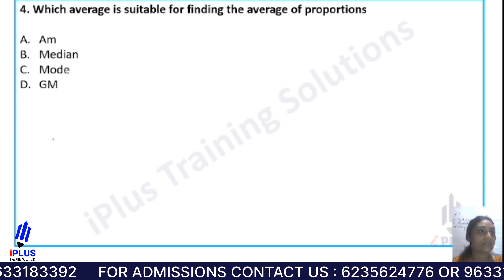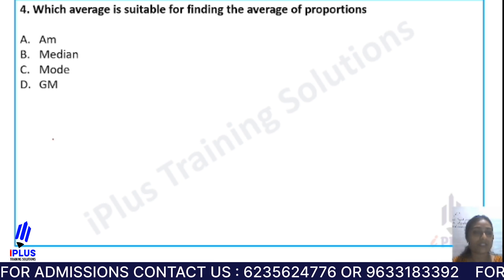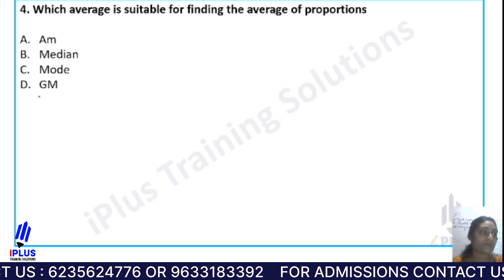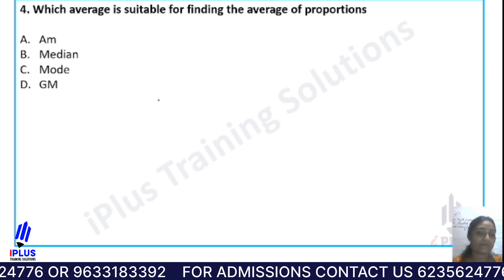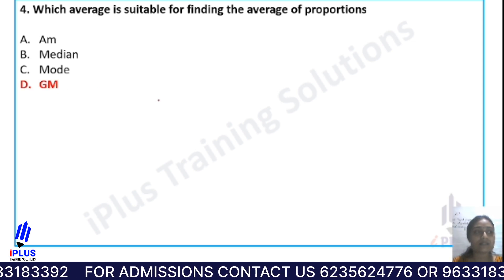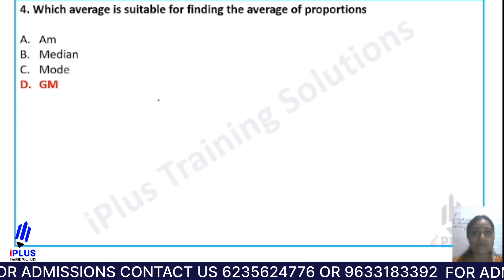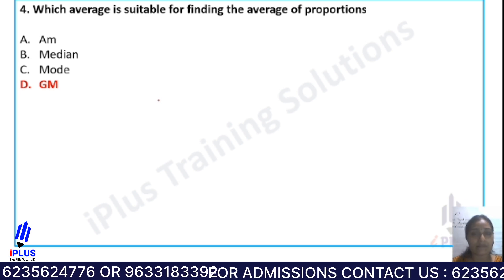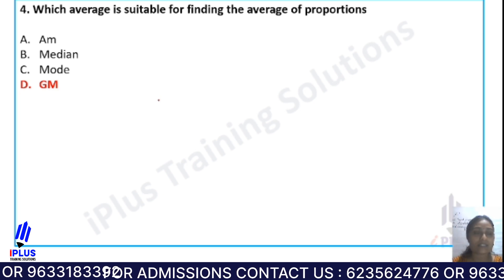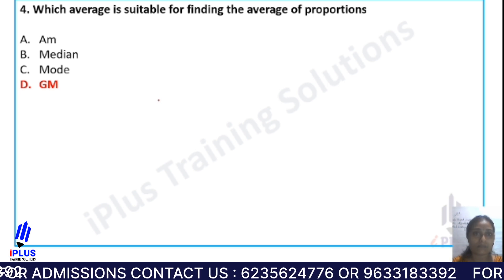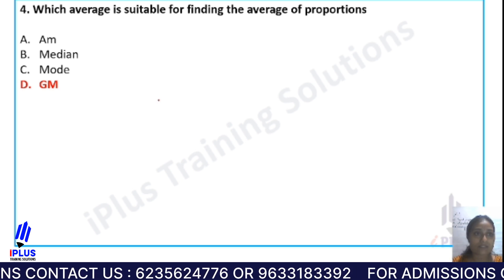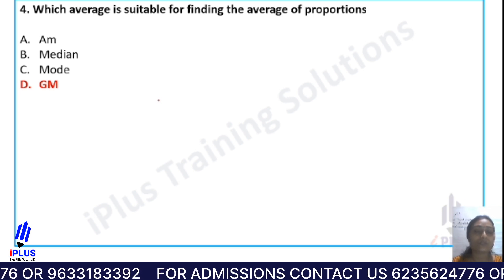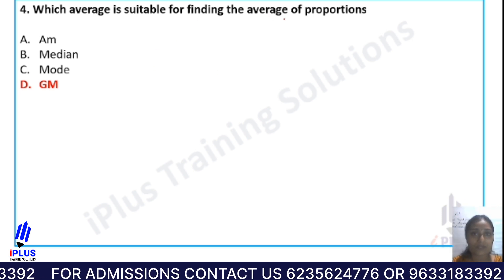Question four: Which average is suitable for finding the average of proportions? Options are: Option A, arithmetic mean; Option B, median; Option C, mode; and Option D, geometric mean. The answer is Option D, geometric mean, which is the most suitable average for finding the average of proportions.